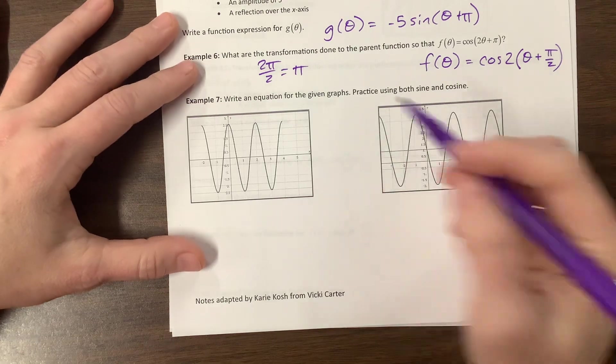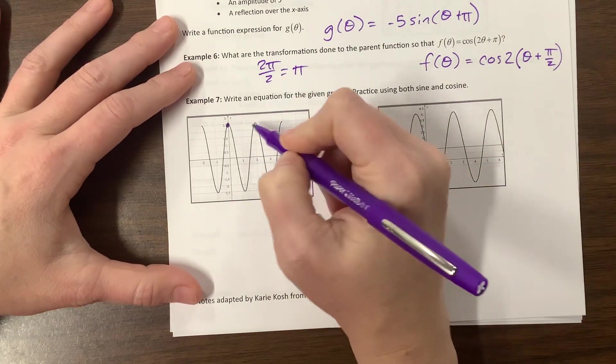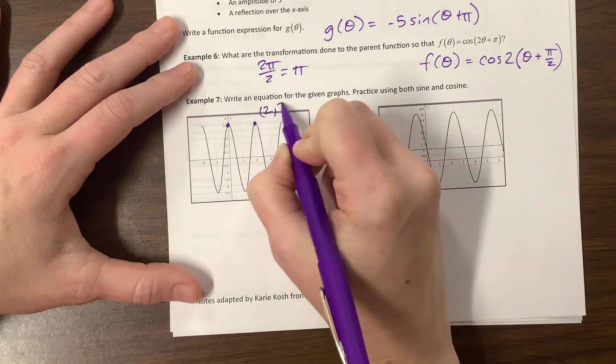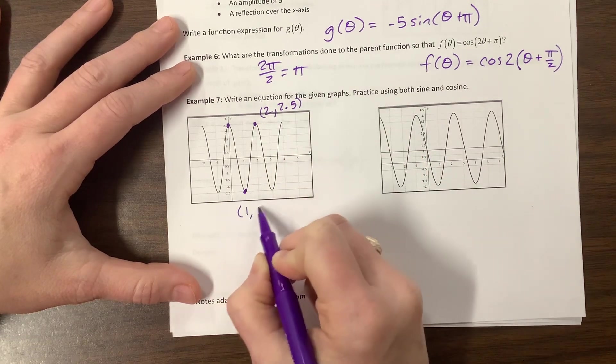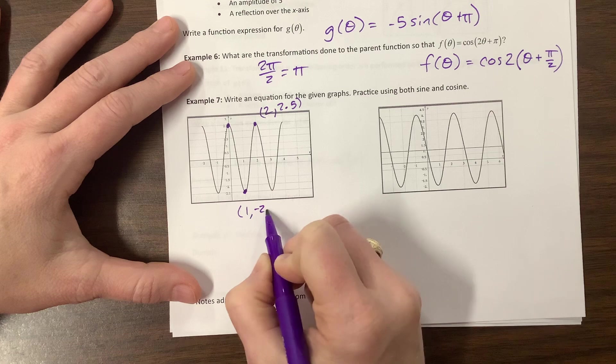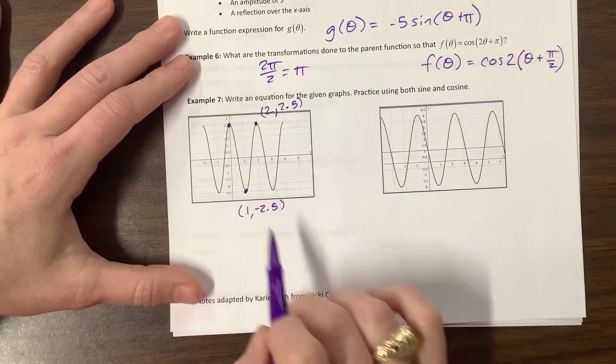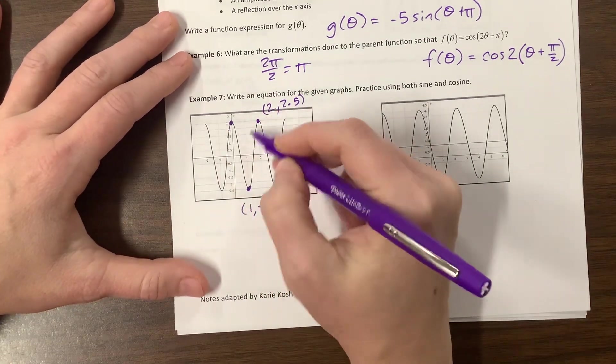Okay, oh my eyes, you guys, this is just not fun. I think this says 2.5, and then this would be at, I think, if I'm reading this correctly, this is the point 2 comma 2.5, and this to me looks like it's the point 1 comma negative 2.5. Okay, so write this equation. We're going to write it as sine and cosine.